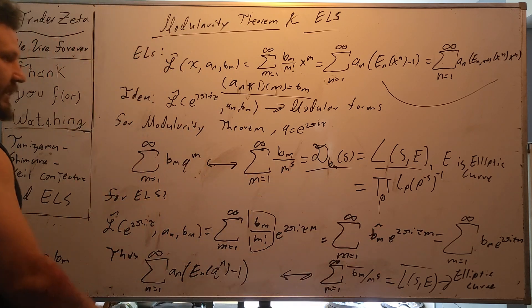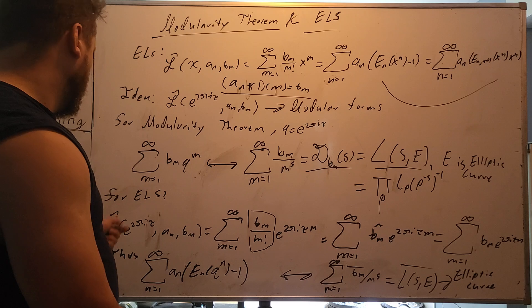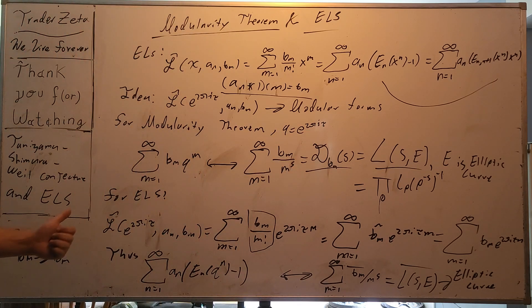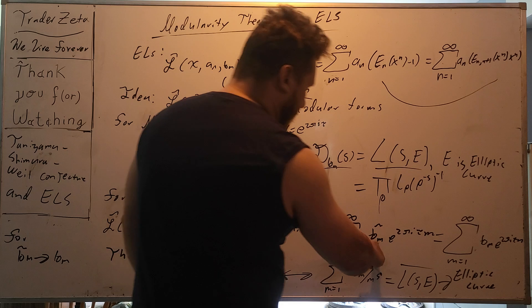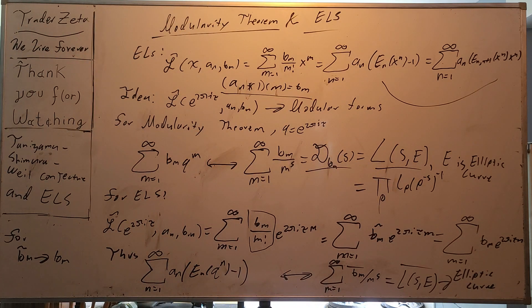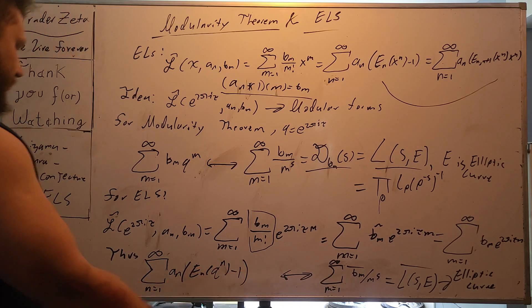And so the whole idea is that the ELS has an associated elliptic curve via the modularity theorem. So if you can map somehow b_m tilde to all b_m's, you're in a really good place. Or even some of them. It doesn't have to be all of them. Maybe there's some really important ones that we care about that we can do this with.